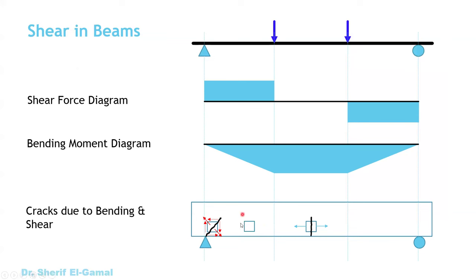In between, in the shear span where you have both shear force and bending moment, you will have tension due to bending moment and also some shear stresses. The resultant of these forces will give you the principal tensile stress in a direction between vertical and 45 degrees. Any crack here will be perpendicular to this principal tension force.